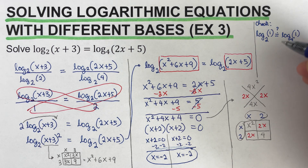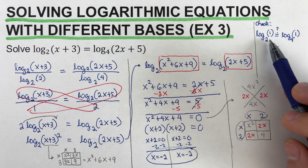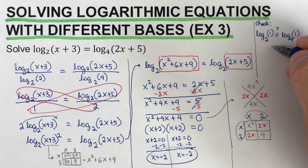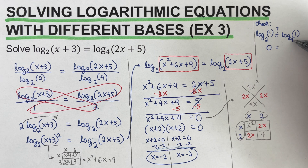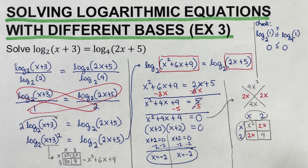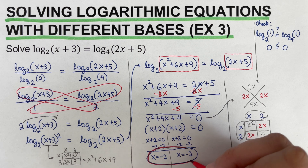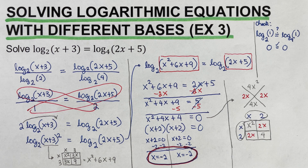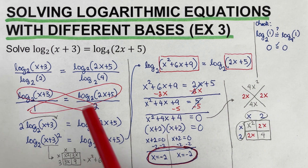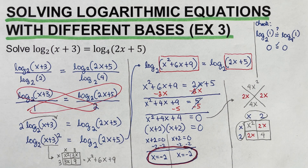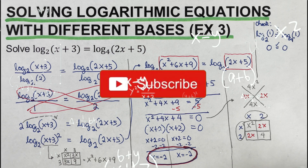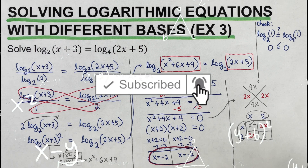For log of 1 to the base 2, we ask: what exponent of 2 gives 1? That is 0. For log of 1 to the base 4, what exponent of 4 gives 1? That is also 0. So 0 = 0 — the equation checks out. Therefore x = −2 is our solution. Plugging x = −2 back into the original equation makes both sides equal. If you find this video helpful, hit like and subscribe for more math videos. See ya!